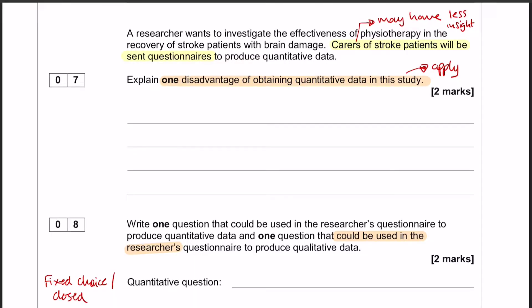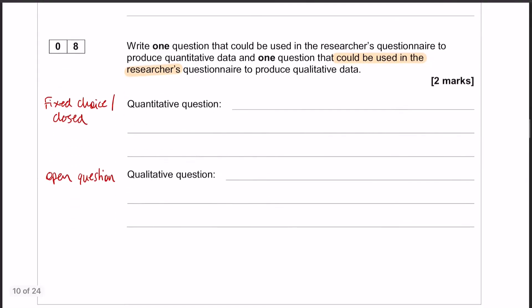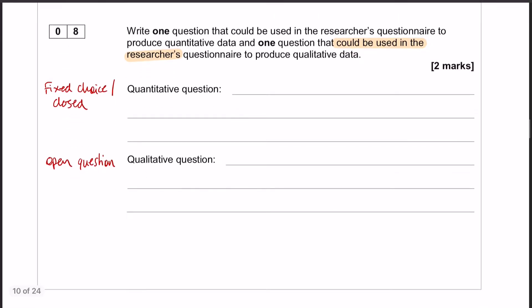Okay, if you don't apply, you don't get the second mark. So question 8 follows on directly from that, and this is just about writing appropriate questions. We've got to write one question that's going to produce quantitative data, so that's going to be a fixed choice or a closed question, and then we need to write one question that's going to produce qualitative data, which is going to be an open question.